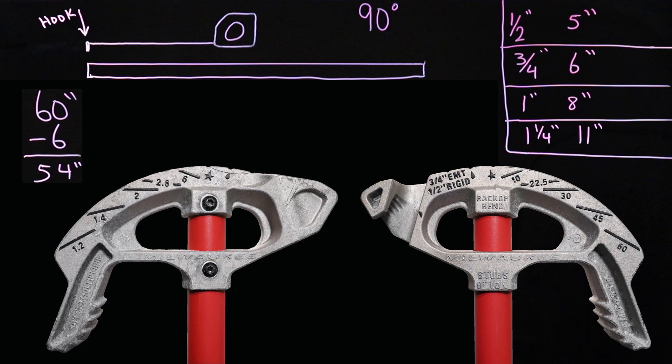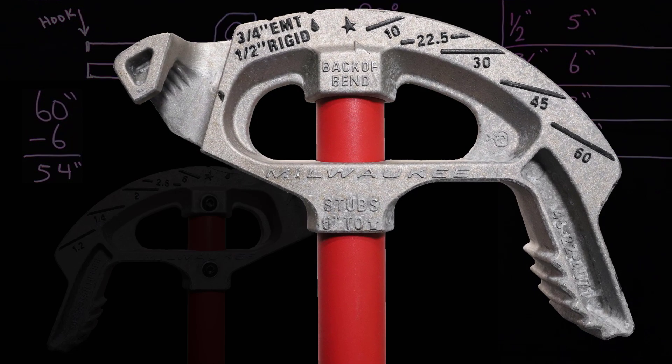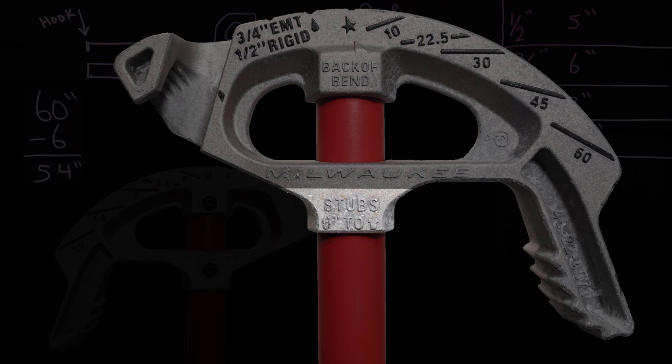Now, some of these benders may have a little bit difference, especially on the inch and a quarter. So always read your bender. The bender head will tell you what the deduction is. There's a different manufacturer that does something a little bit different than the 11 inch. So make sure you read it. It's right on the head of the bender. Always read that.